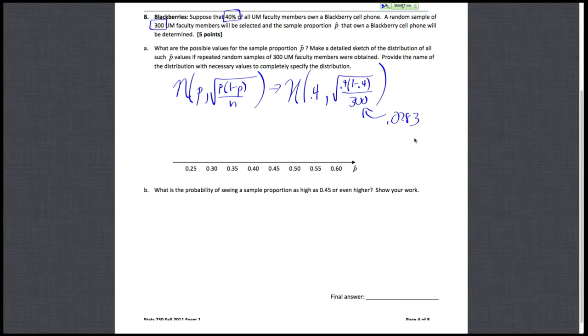So this is 0.0283. And if you recall, most of our data should be contained within three standard deviations of our data. And three standard deviations, that's three times 0.0283. That's about 0.0849.